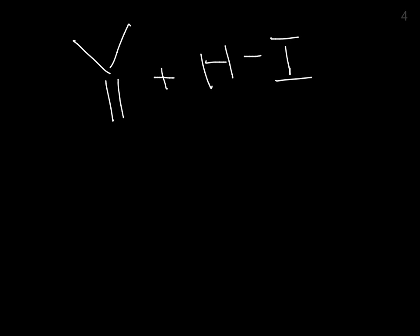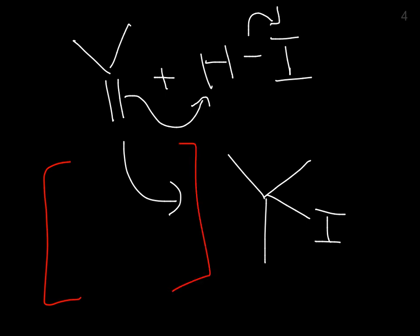You would end up with, take a guess, this. Because your intermediate, after that pi bond goes and breaks out and grabs the hydrogen and the iodine leaves, you're going to end up with this as your intermediate, and this is technically how you draw intermediates. Let me get rid of that arrow. You're supposed to put brackets around them.